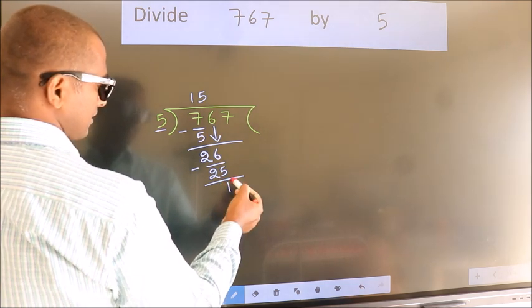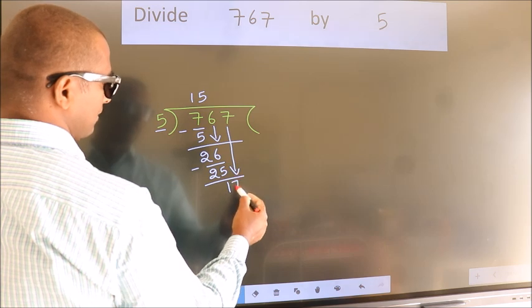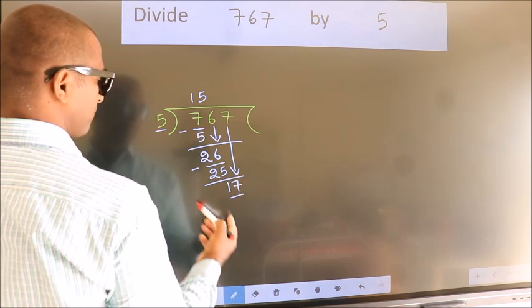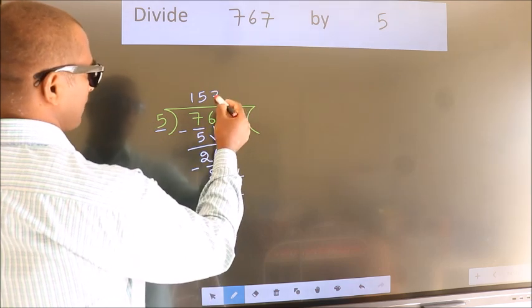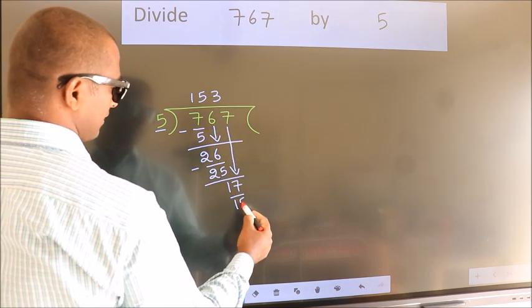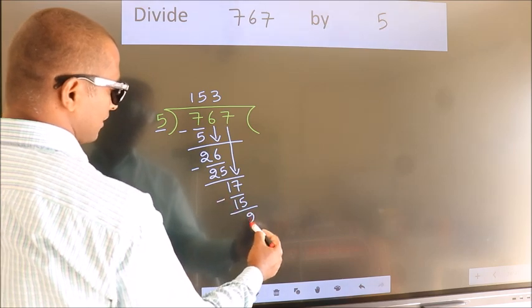After this, bring down the beside number. So 7 down, so 17. A number close to 17 in 5 table is 15, 5 times 3. Now we subtract. We get 2.